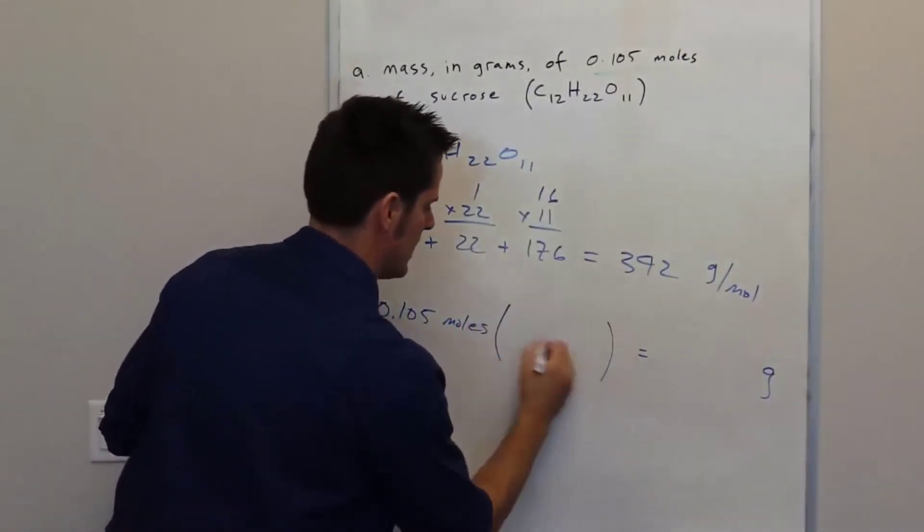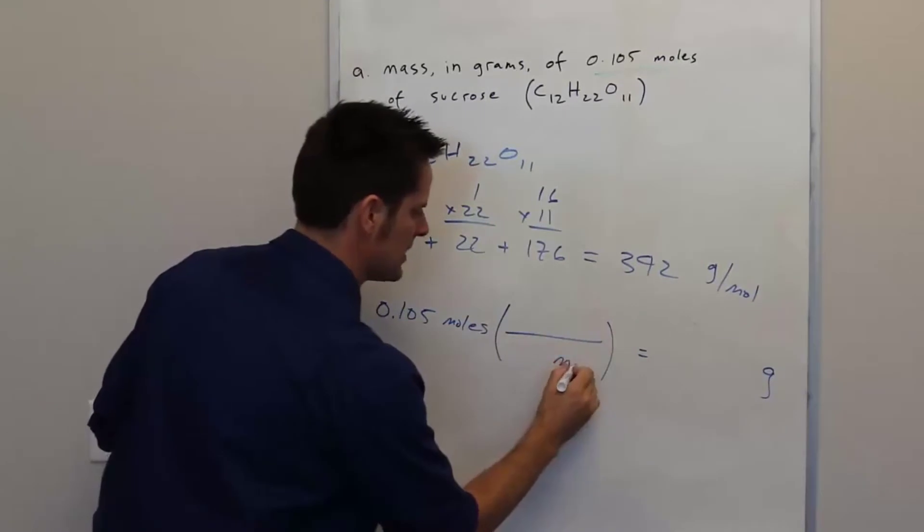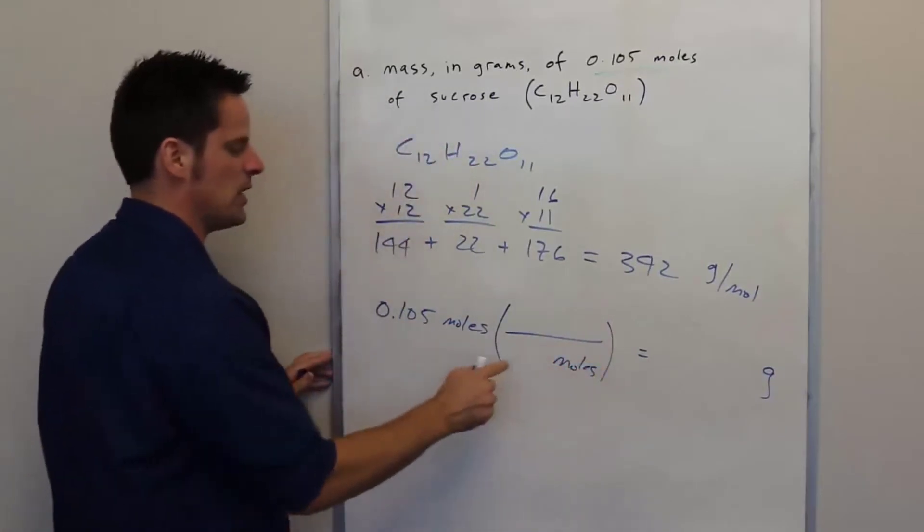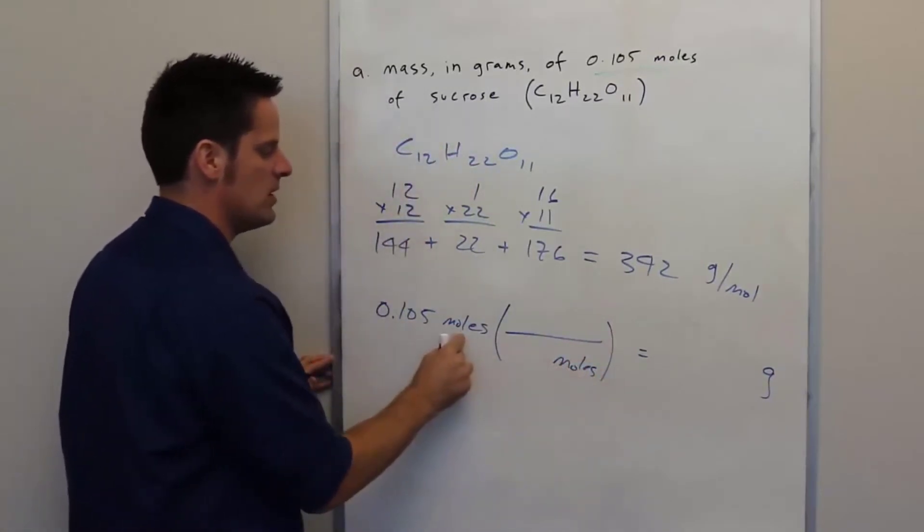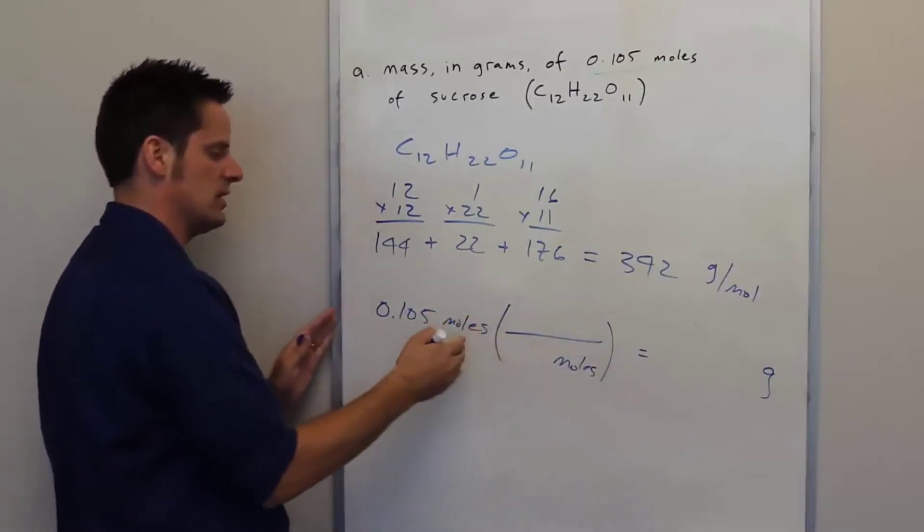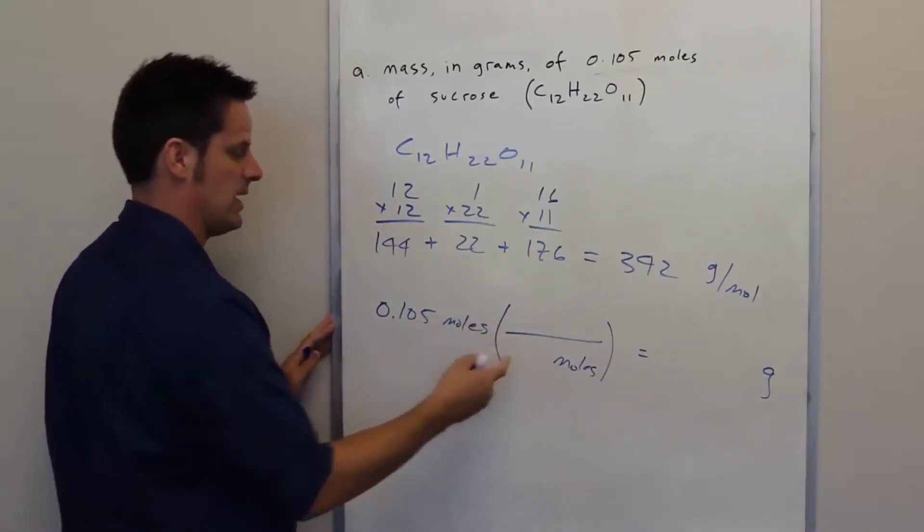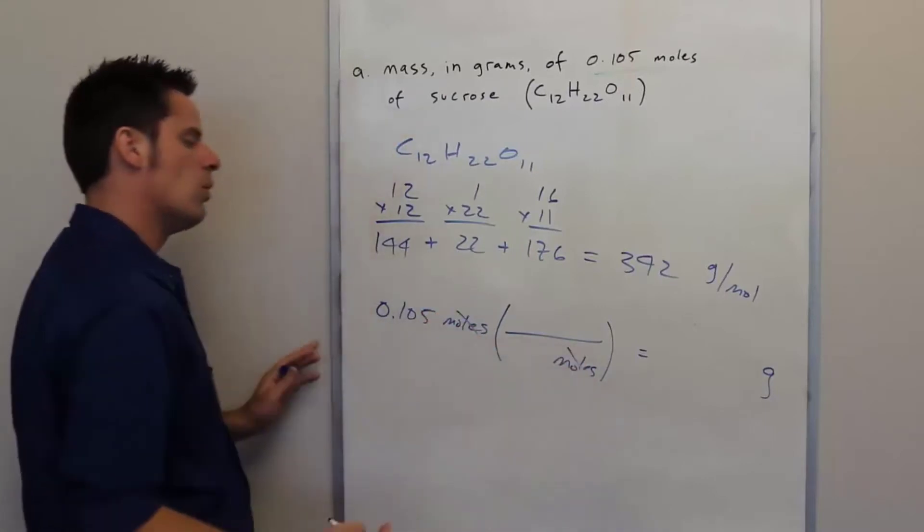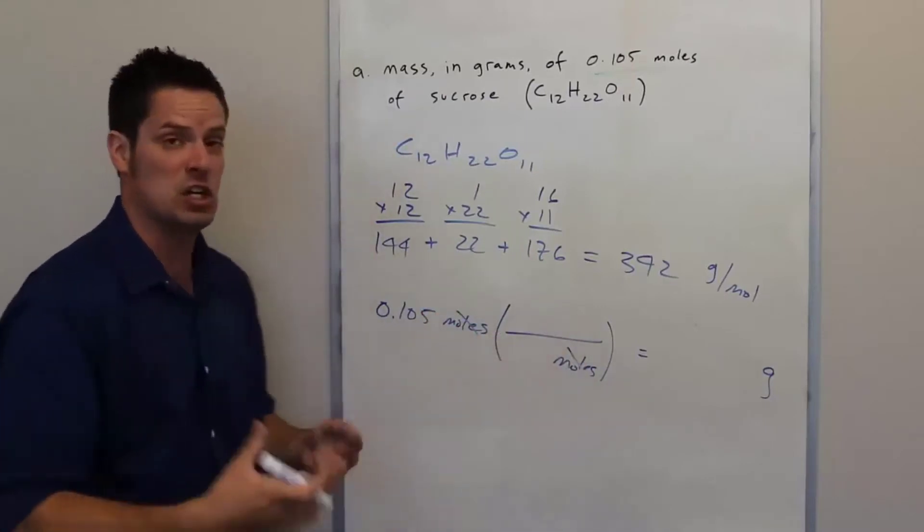Here's my bracket setup. I'll go ahead and put moles in the denominator. Now you should remember, of course, we put the units in the denominator that we have of the set of brackets to the right that we have in the numerator just to the left. So that's kind of how it lines up because they'll cancel each other out.